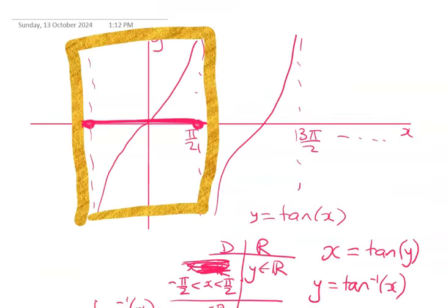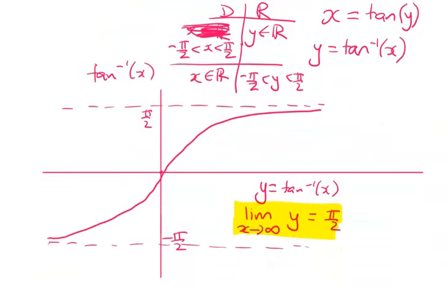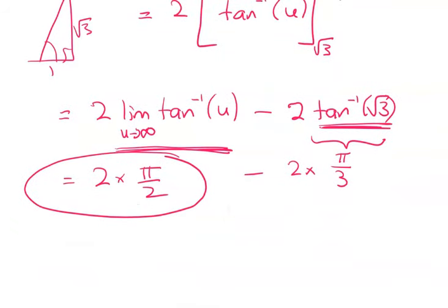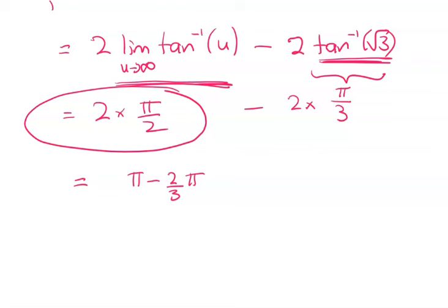Here's my graph of the inverse tan function, and you can see that as u gets very, very big, we're getting closer and closer to that asymptote, which is π/2. So that's where that came from in there. So my final answer here is π minus 2/3 π, which is π/3.